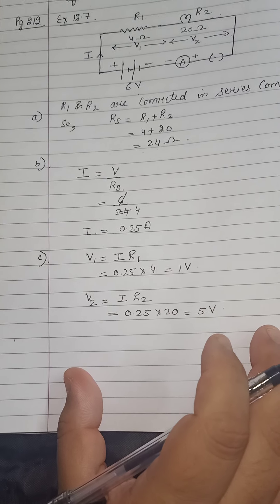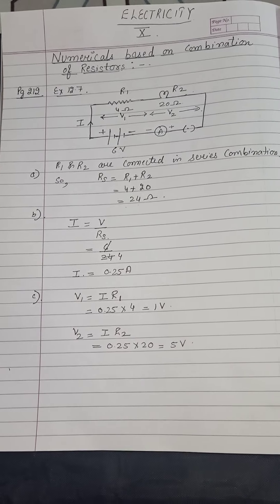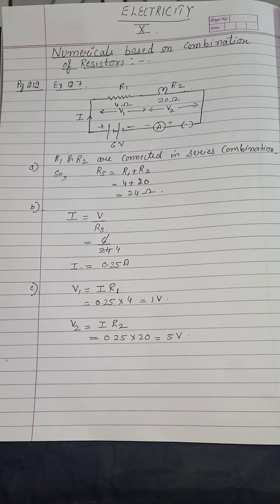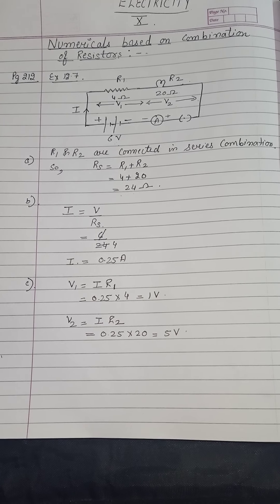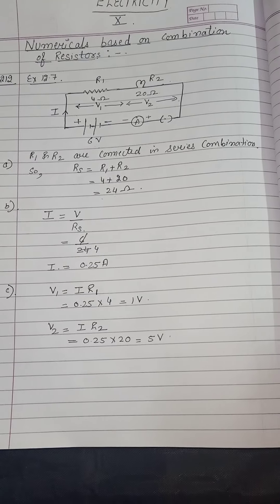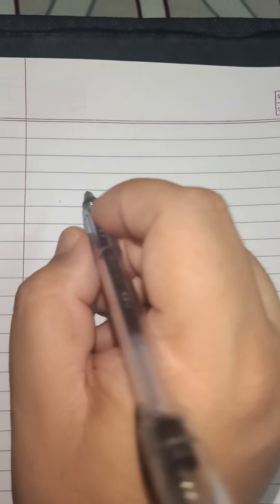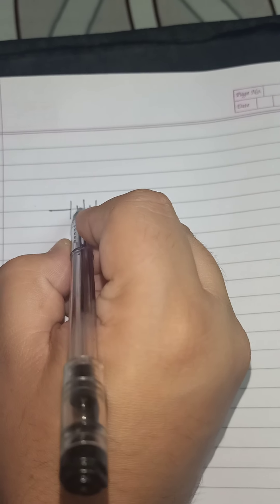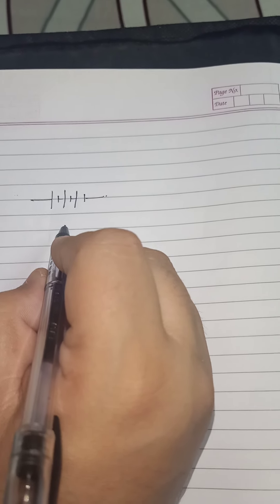This was a very simple problem based on series combination. Let us now read the BPQ given on page 213 based on series combination. In the first question, we are given a battery of 3 cells, with a potential difference of 2 volt across each cell, so the battery comes out to be 6 volt.